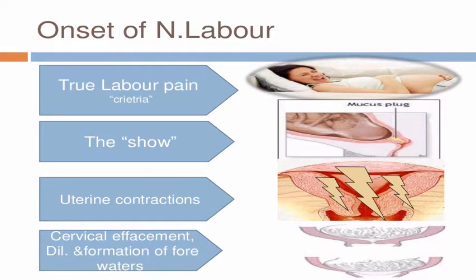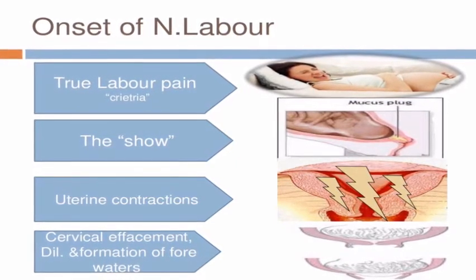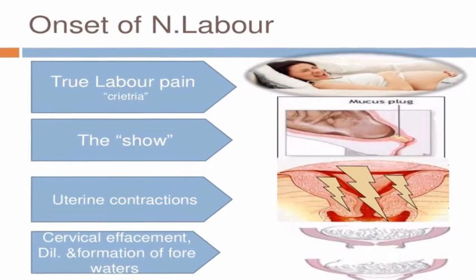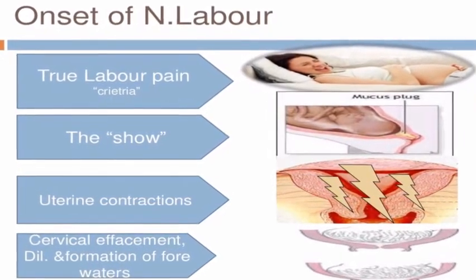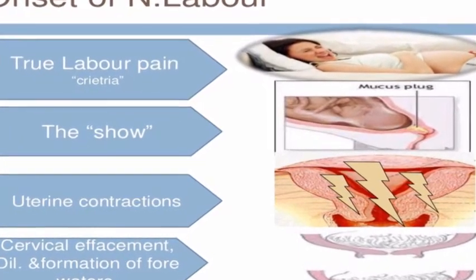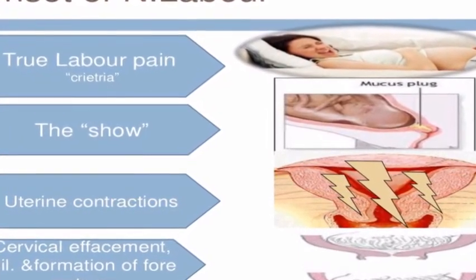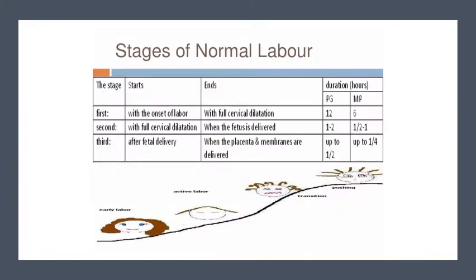Signs of true labor include regular painful contractions, cervical effacement and dilatation, and formation of the forewaters — we have the water ahead and water behind the presenting part. Regarding stages of normal labor, some say three stages and others say four stages.